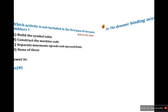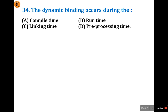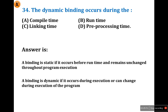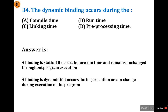Question 34: dynamic binding occurs during — there are two types of binding: static binding and dynamic binding. Static binding occurs before runtime and remains unchanged throughout program execution. Dynamic binding occurs during execution or can change during execution of the program.